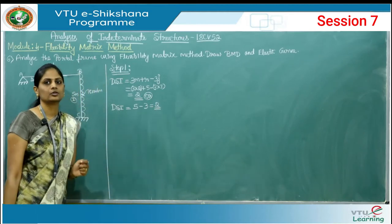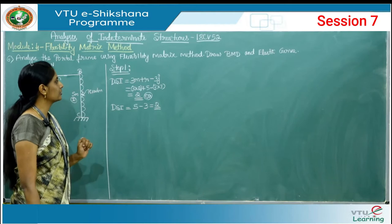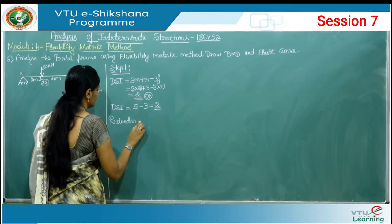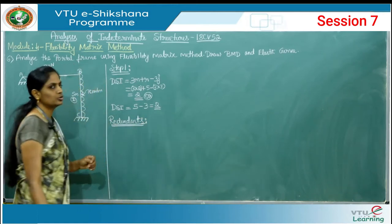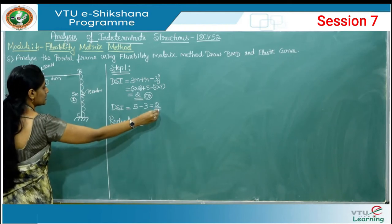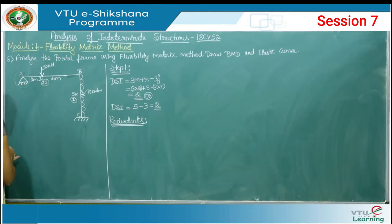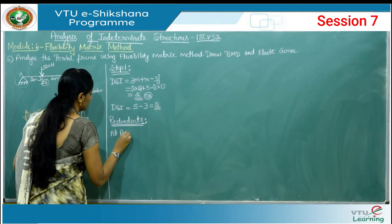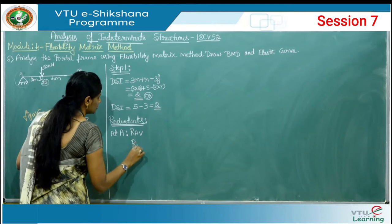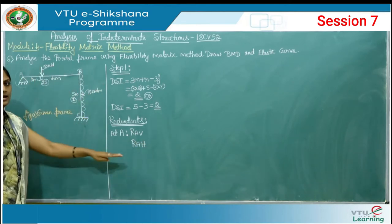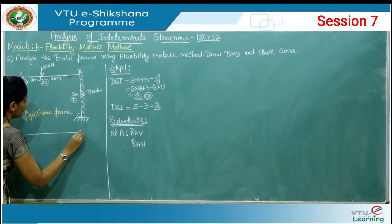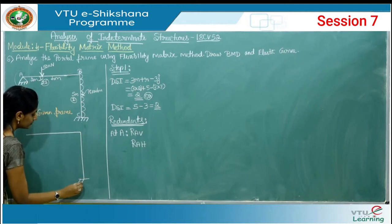Alternatively, number of unknown reactions (5) minus equilibrium conditions for a portal frame (3) also gives DSI = 2. Based on this, we assume 2 redundants. I take off the support at A and call the resulting structure the released structure or given frame.